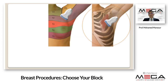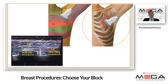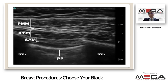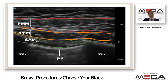To perform PECS-2, a linear high-frequency probe is used, moved laterally to visualize the third and fourth ribs. The serratus anterior muscle is visualized below the pectoralis minor. The pectoralis major, pectoralis minor, serratus anterior muscle, and the parietal pleura can all be identified on the ultrasound image.